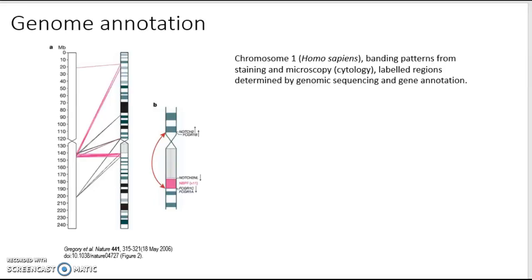We just looked at Human Chromosome 1 at the UCSC genome browser, and hopefully that example shows you some of the wealth of information that you can have in a fully finished genome — a genome that has been fully annotated. That's kind of the end goal, and we're looking at an earlier step in that and thinking about how you get to that end goal.